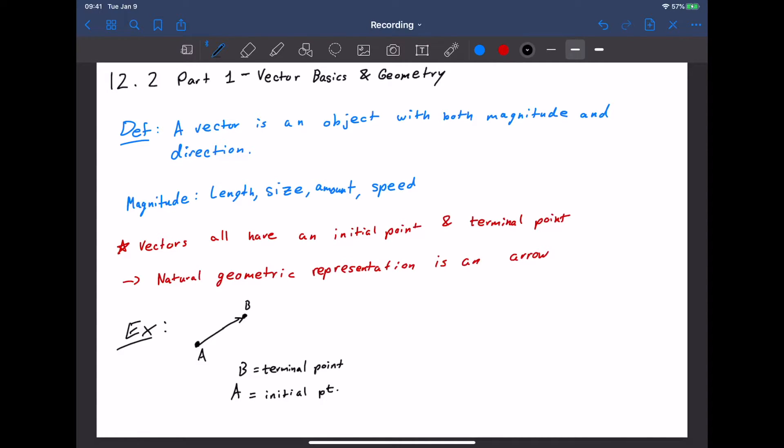The arrow does not mean we go on forever like it did with a ray or with a line. What the arrow means is that was the direction we traveled.